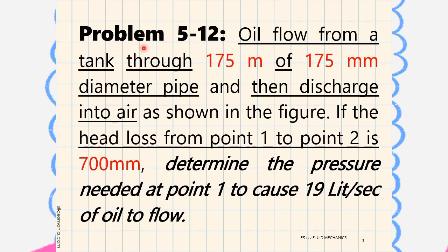So here is problem 5-12. Oil flow from a tank through 175 meters of 175 millimeter diameter pipe and then discharge into air as shown in the figure. If the head loss from point 1 to point 2 is 700 millimeters, determine the pressure needed at point 1 to cause 19 liters per second of oil to flow.